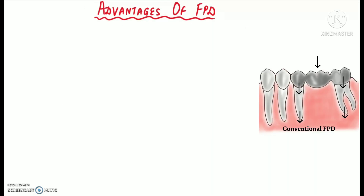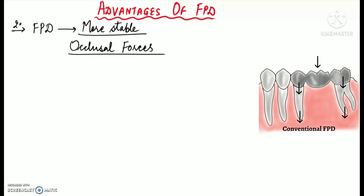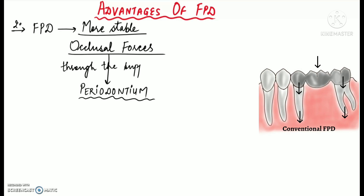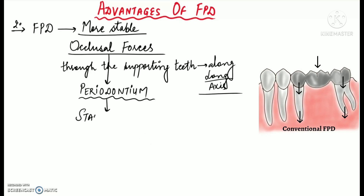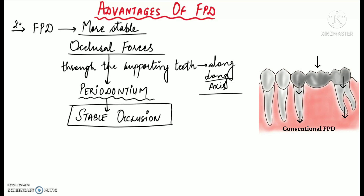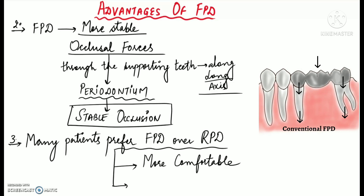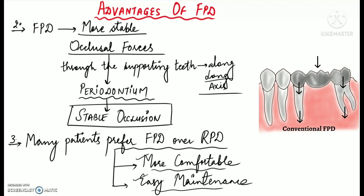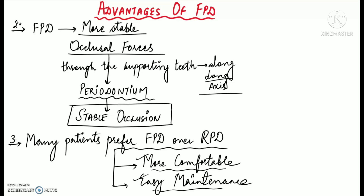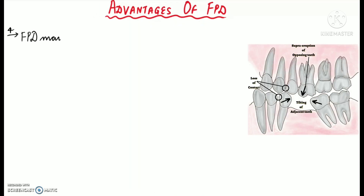A fixed partial denture is more stable for the patient compared to a removable partial denture because it is capable of directing occlusal forces to the periodontium along the long axis of the supporting teeth, thereby providing a stable occlusion. Many patients also prefer FPD over RPD because it is more comfortable. Unlike RPD, FPD need not be removed regularly for cleaning and can be cleaned just like natural teeth by brushing.